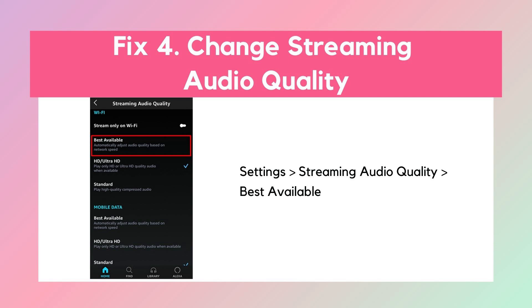Fix 4: Adjust streaming quality. If you've selected HD or Ultra HD, ensure your settings match. Go to Settings and set the quality to Best Available. If these fixes don't help, then it's time to ask for help from Amazon Music Customer Support.